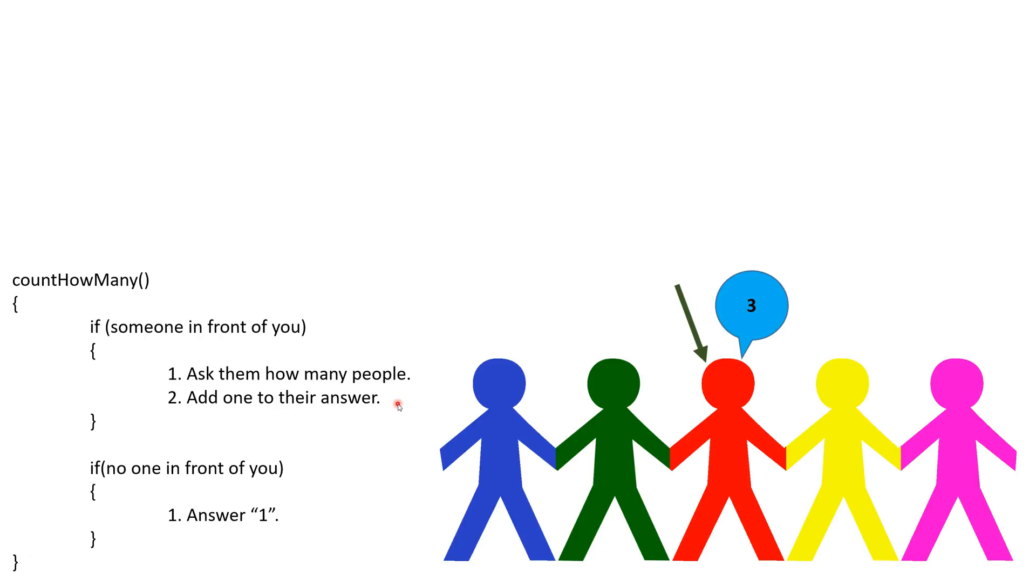Now that red has an answer from yellow, he adds one to yellow's number and responds three. Next, green adds one to red's number and responds four.